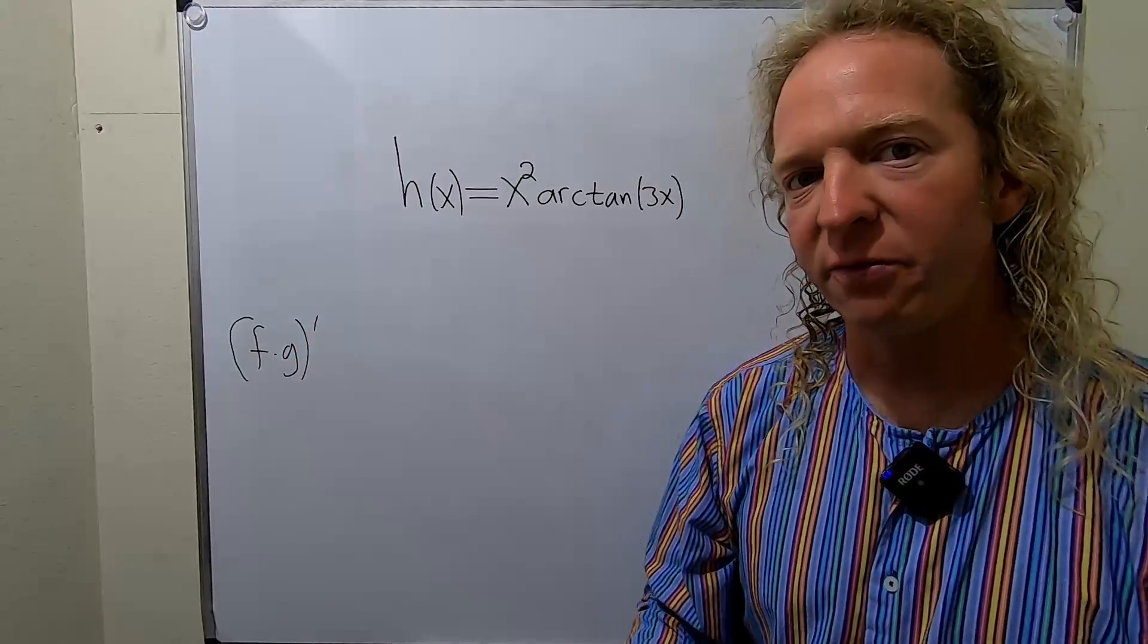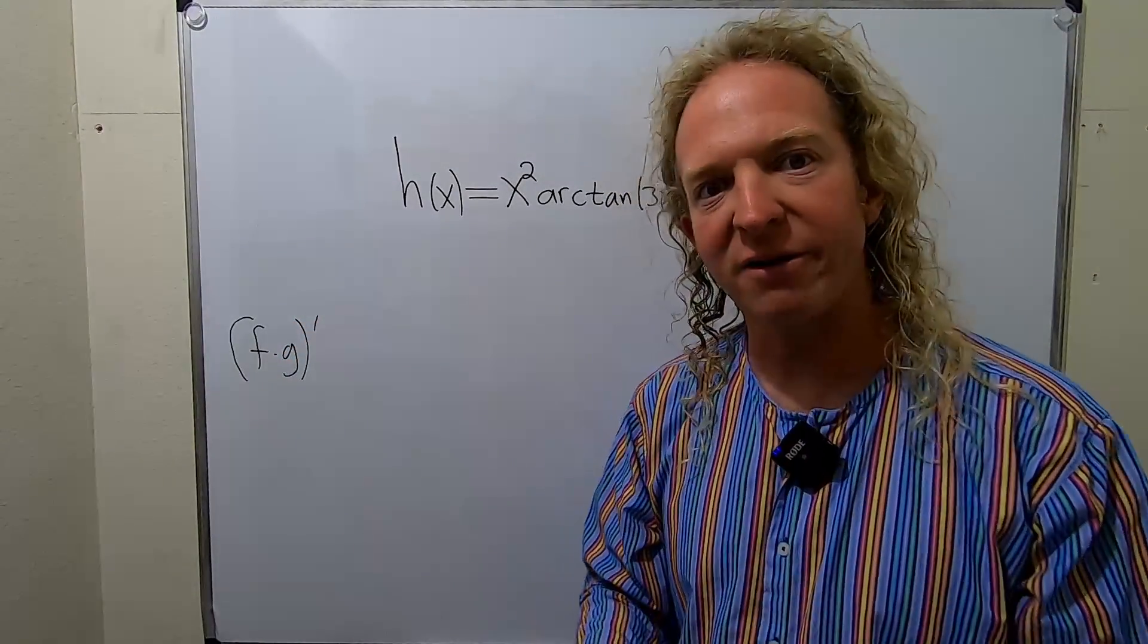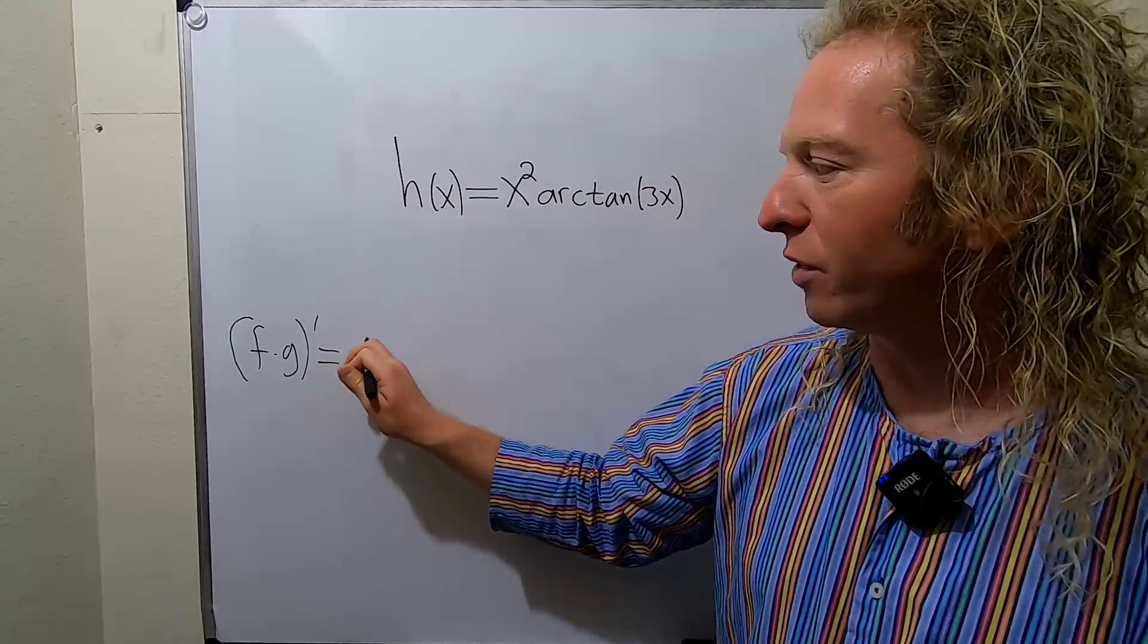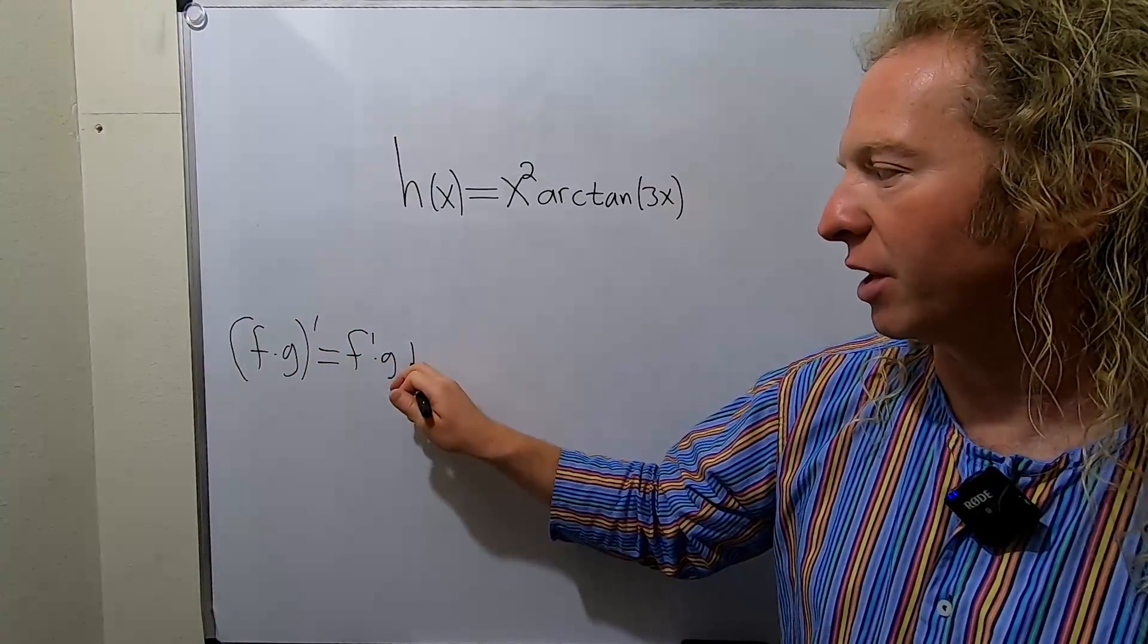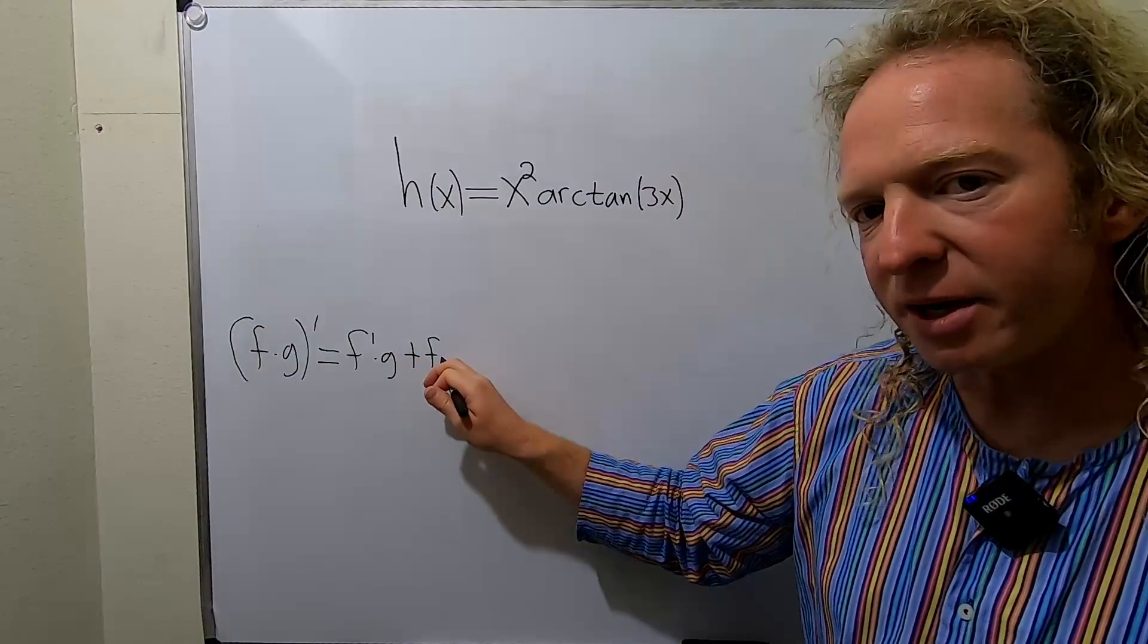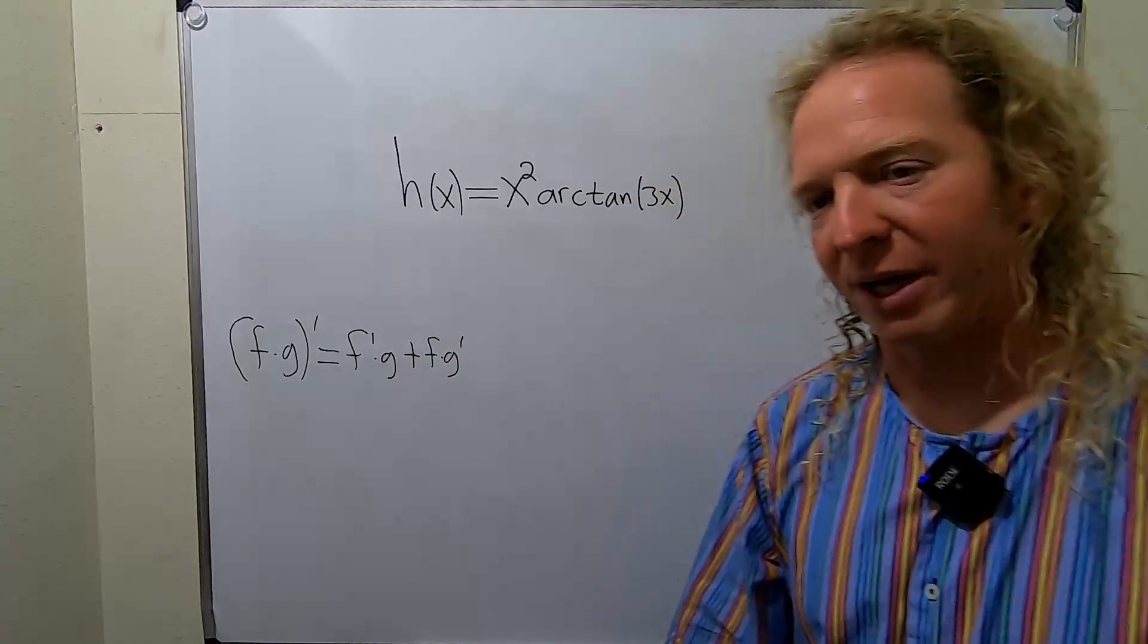and you take the derivative, think of f as your first function and g as your second function. So this will be the derivative of the first times the second plus the first times the derivative of the second. This is called the product rule from calculus.